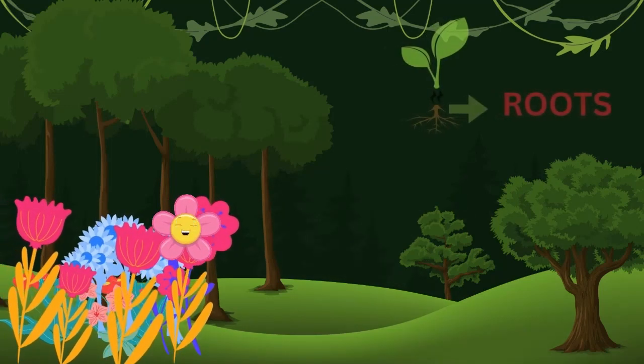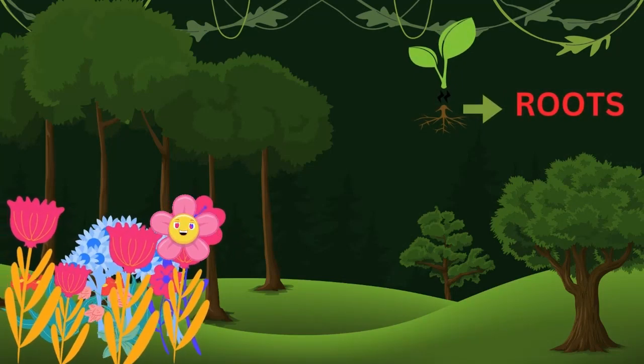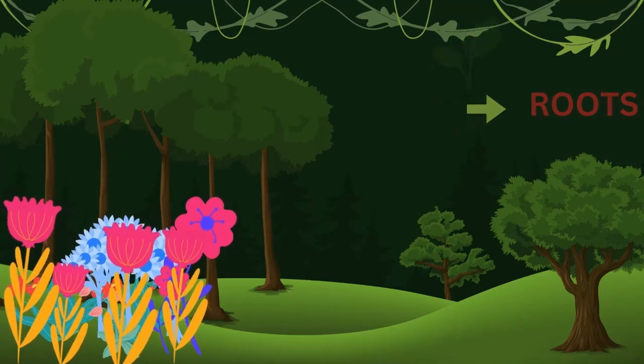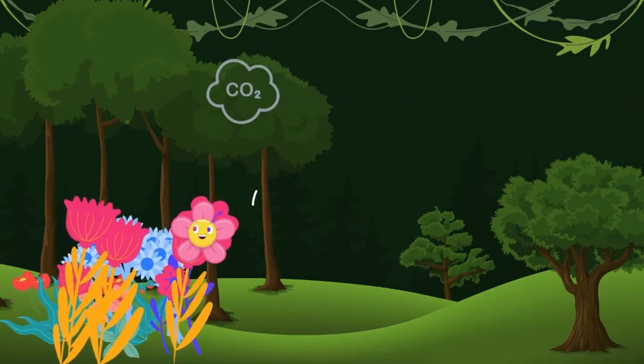First, as you have hands, we have roots. So in first step, we take water from the roots and carbon dioxide from the air. What is carbon dioxide? Carbon dioxide is a gas.